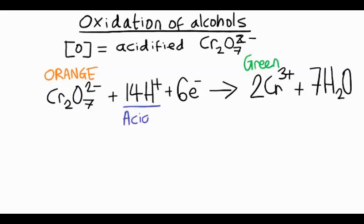We've got 14 H+ ions because it's under acidic conditions. Those are needed for this reduction reaction. And the 6 electrons. Remember, oxidation is loss, reduction is gain. So gain of electrons is reduction. So our oxidizing agent is itself being reduced.